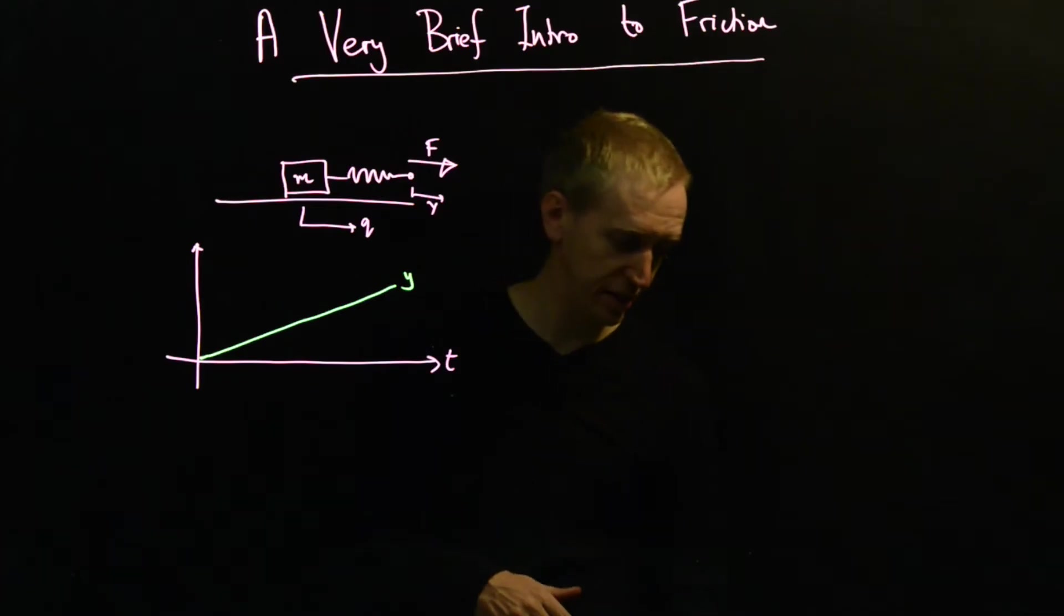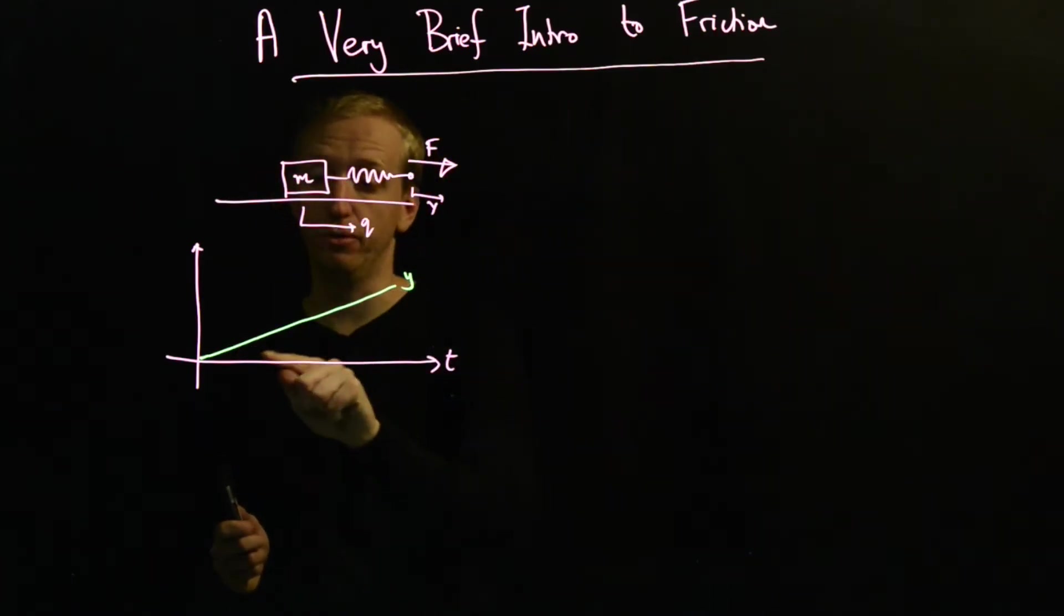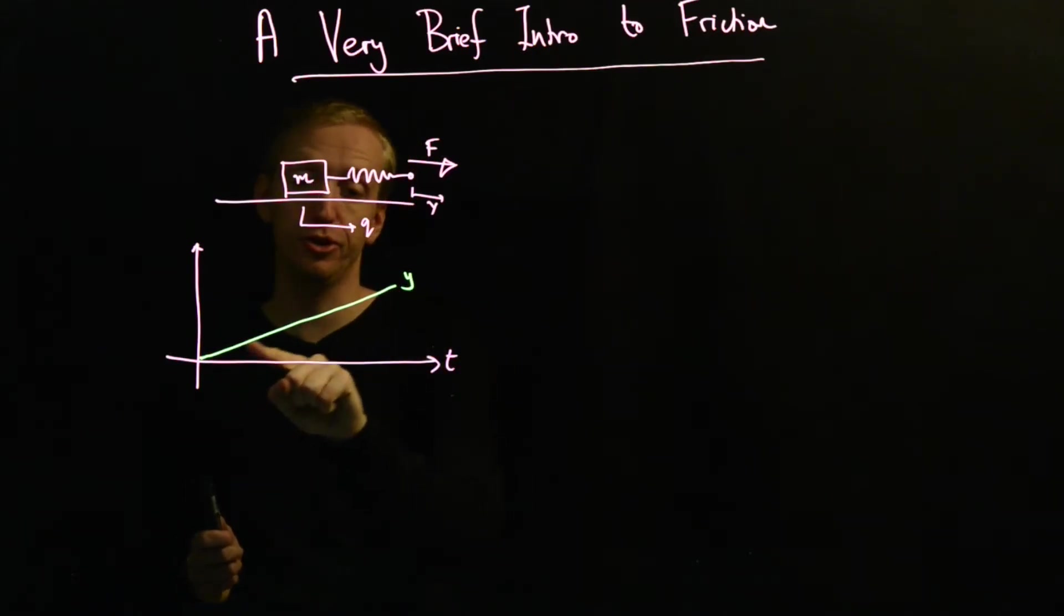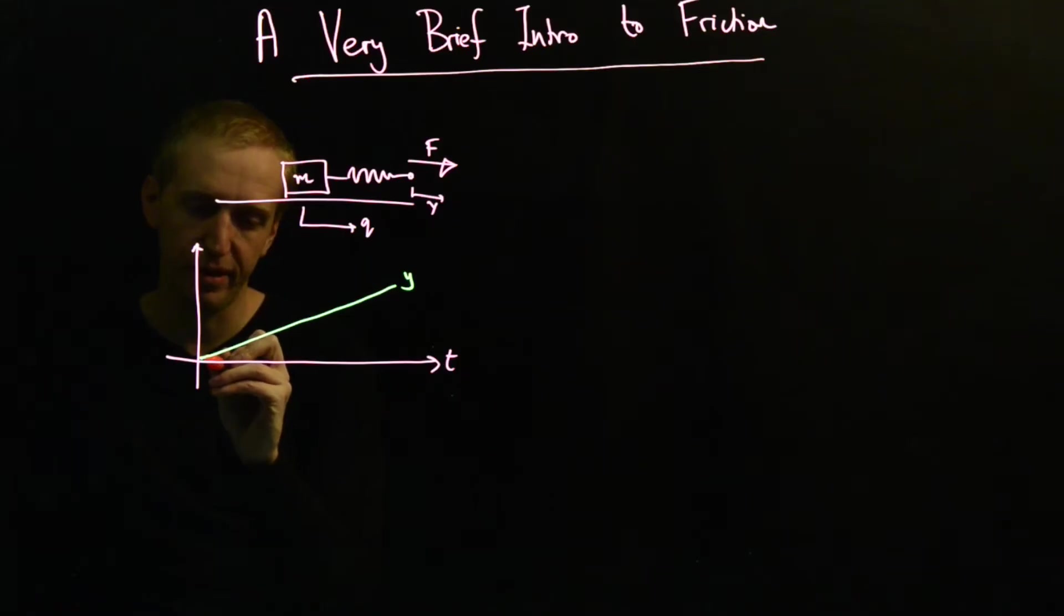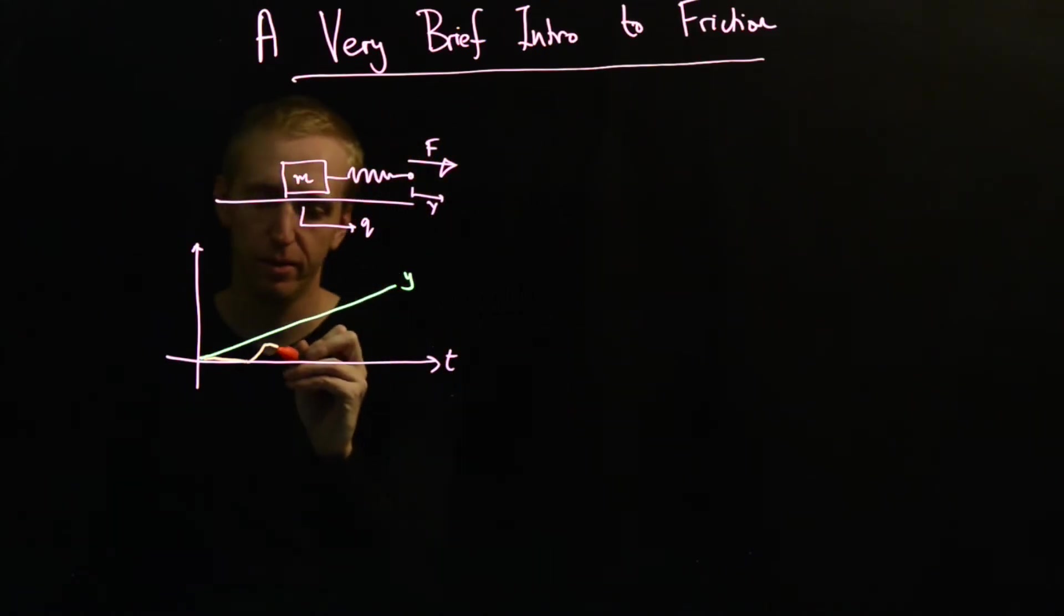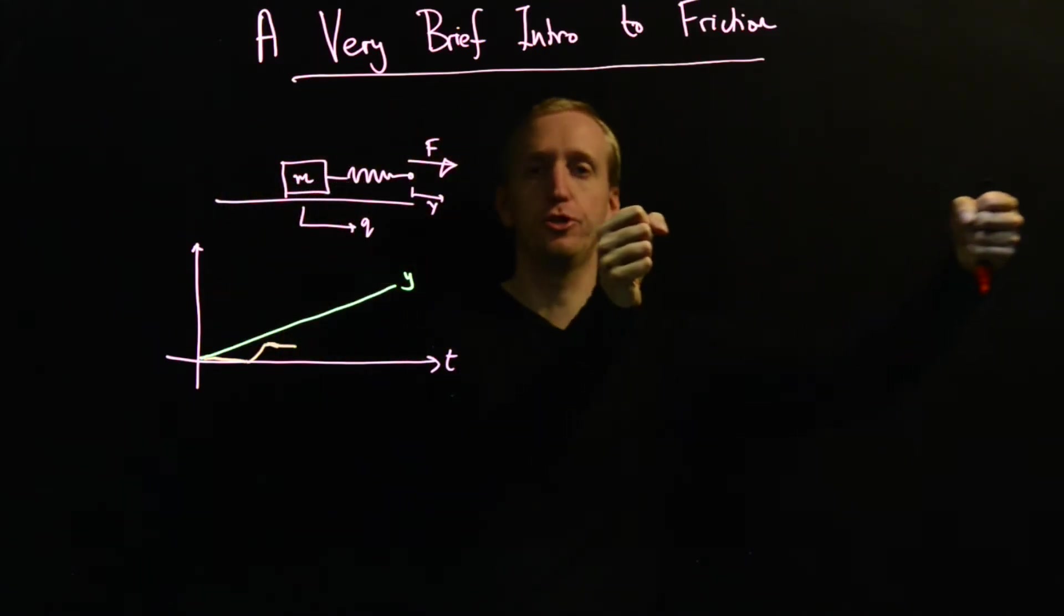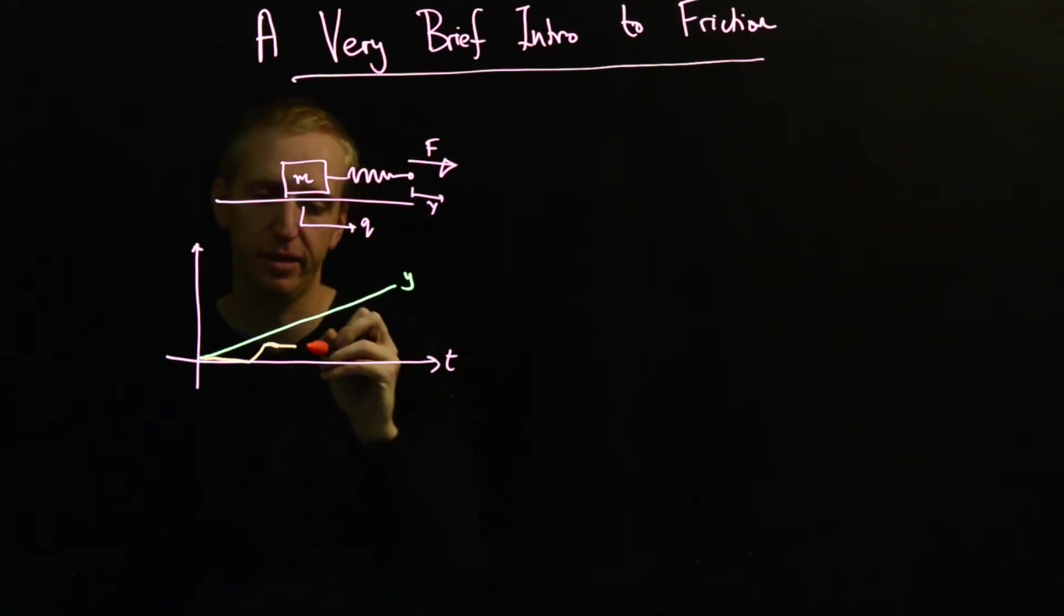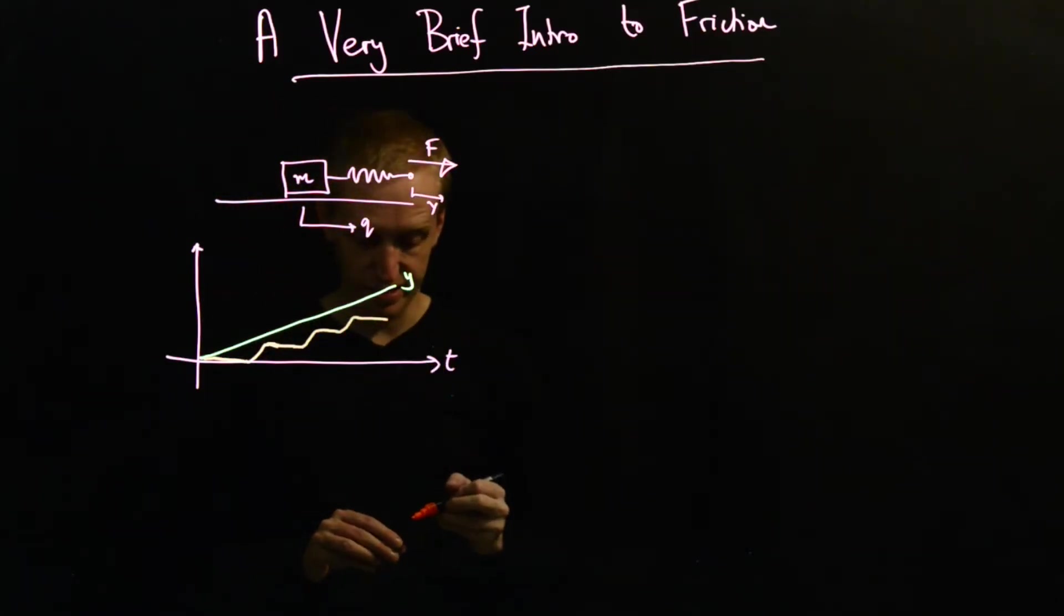But what happens in practice? The mass doesn't just follow, it doesn't start at q equals zero and ramp up. What tends to happen is initially nothing happens, then it jumps forward, then you get stuck again, and then the spring gets longer and longer and eventually it just jumps and snaps. You might observe a behavior more like this.